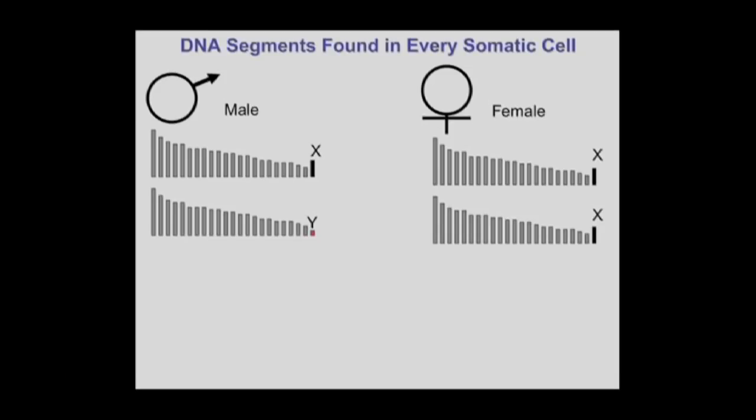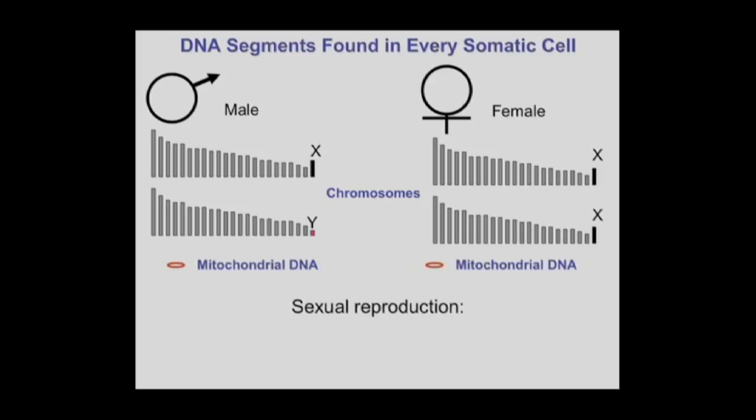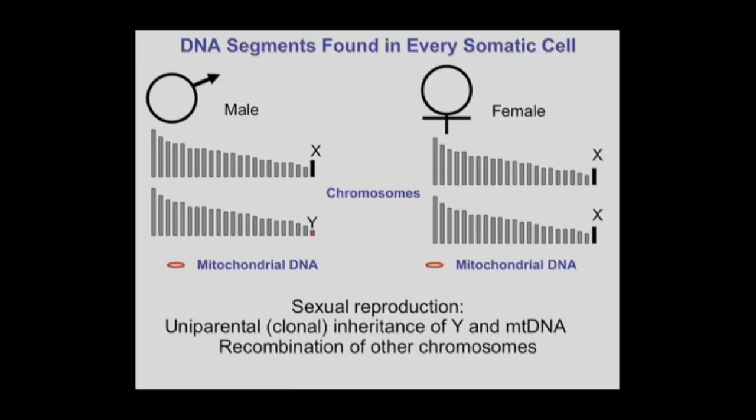Each of you have chromosomes derived from your parents, and if you're male, you have a Y instead of two X's. There's a mitochondrial DNA which is in all cells. During sexual reproduction, you get uniparental clonal inheritance of Y and mitochondrial DNA, and recombination of other chromosomes can take place.